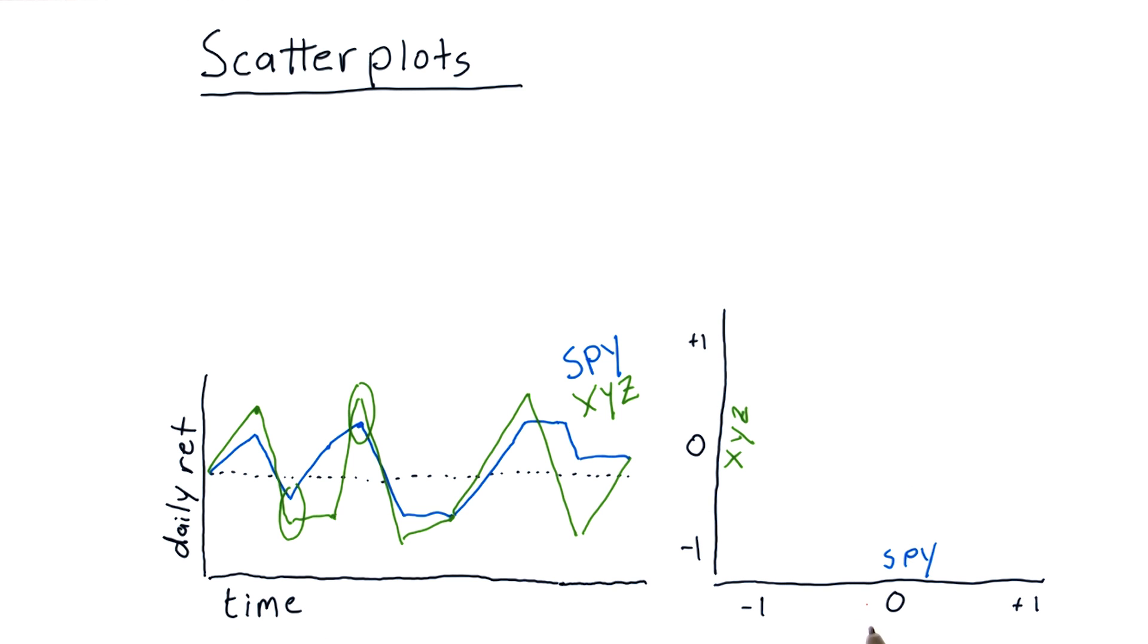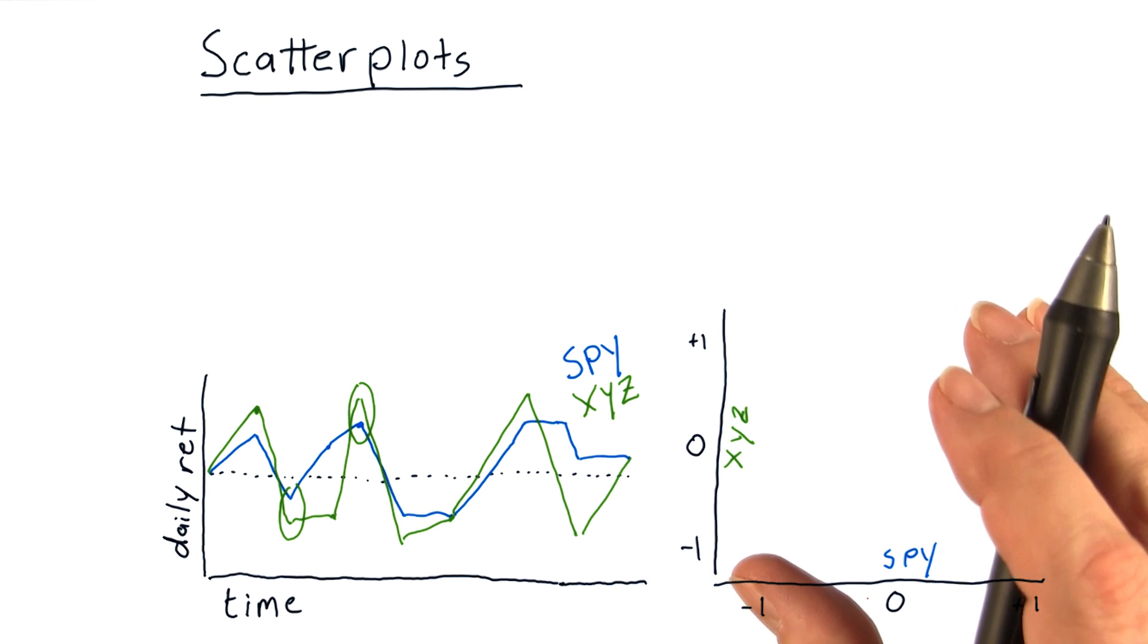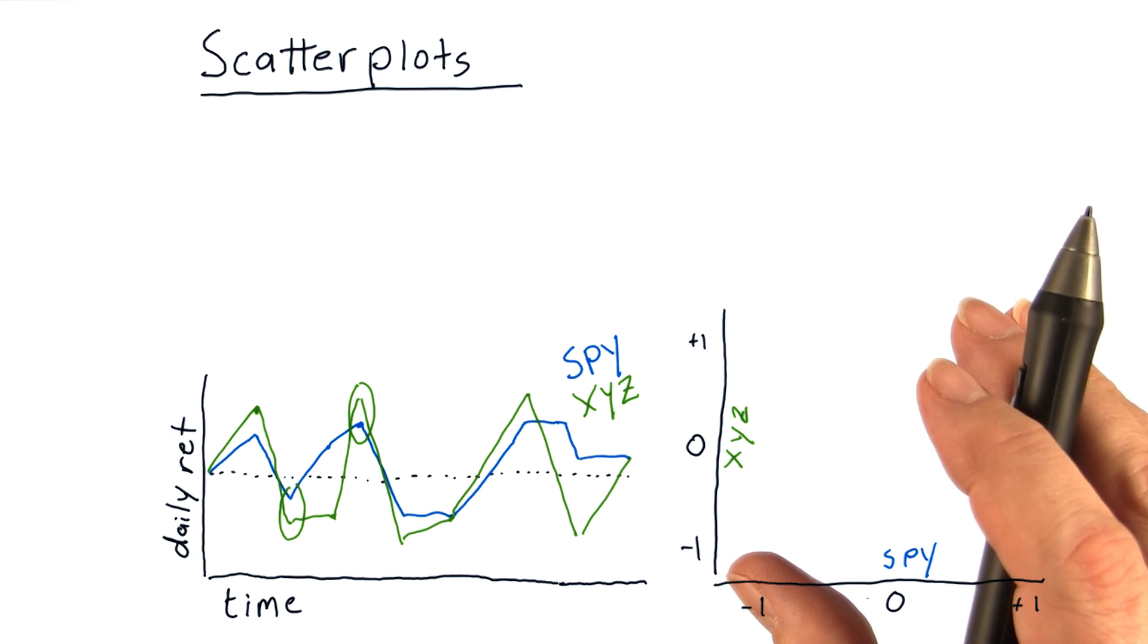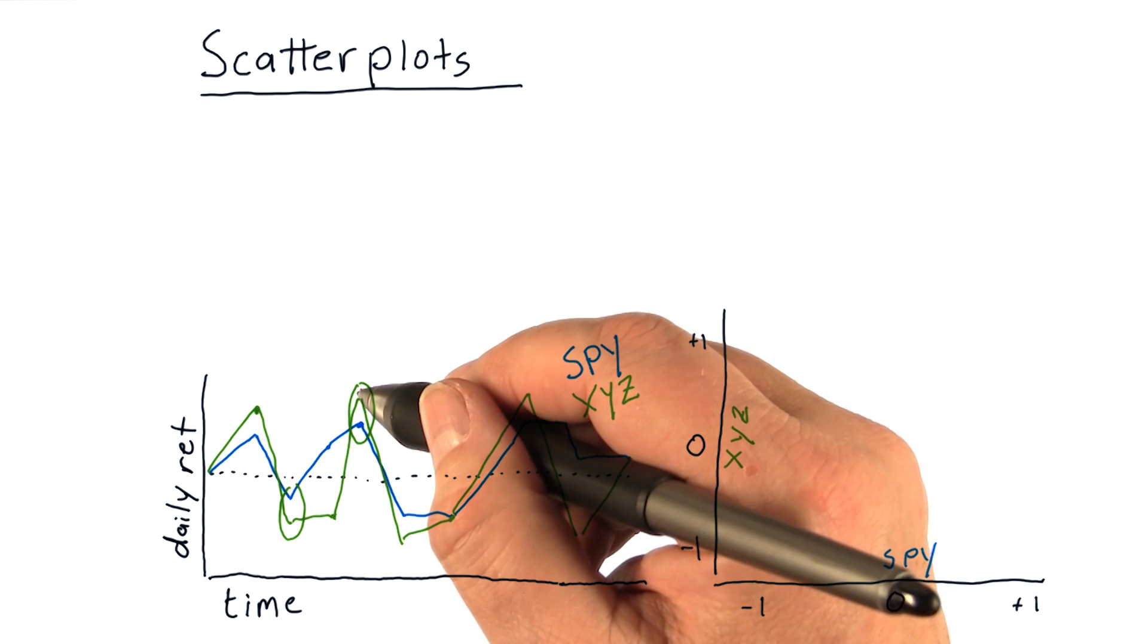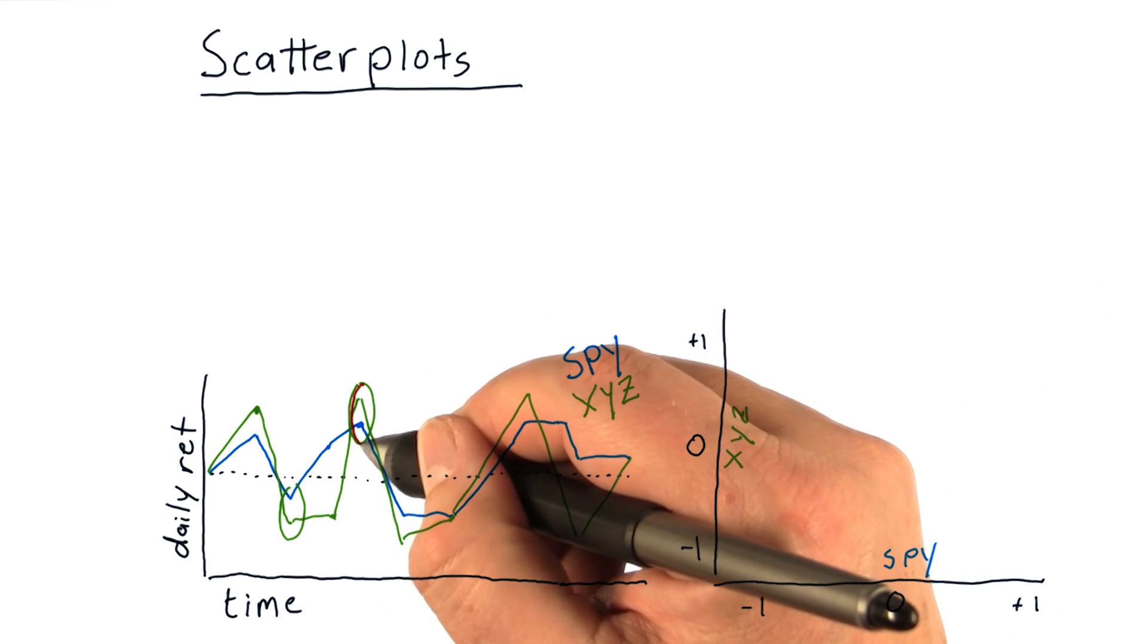So on a scatter plot, there are a number of individual points or dots, and each one represents something that happened on a particular day.